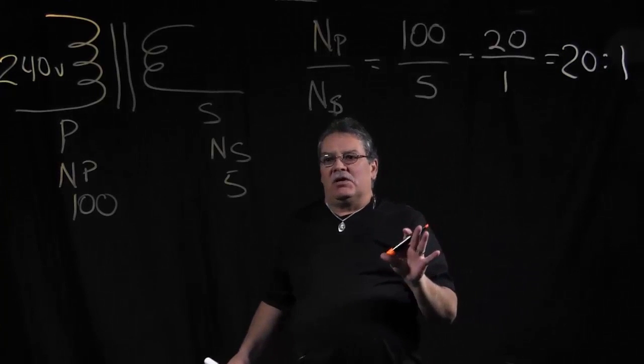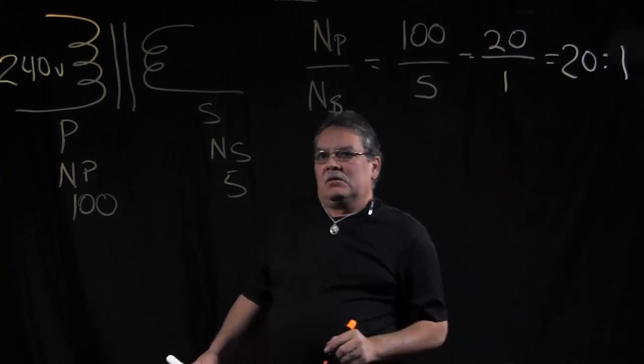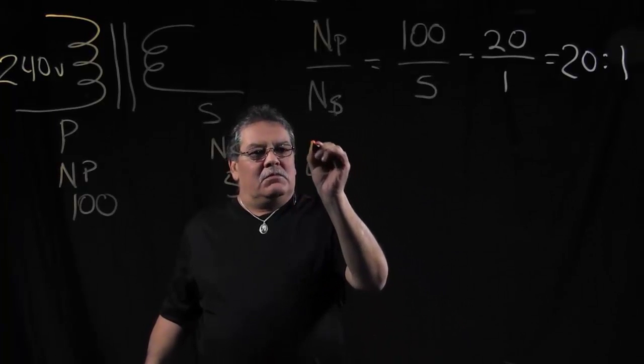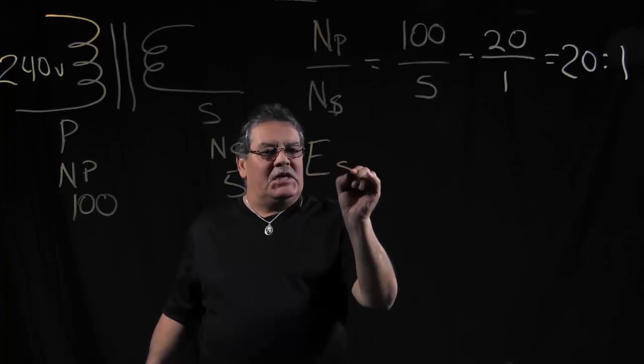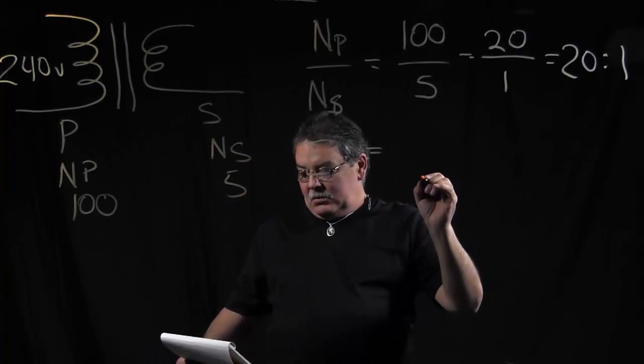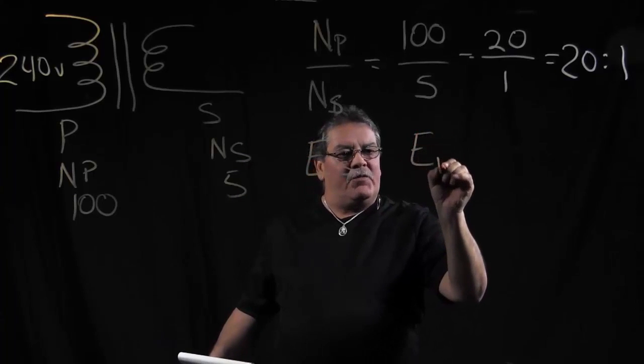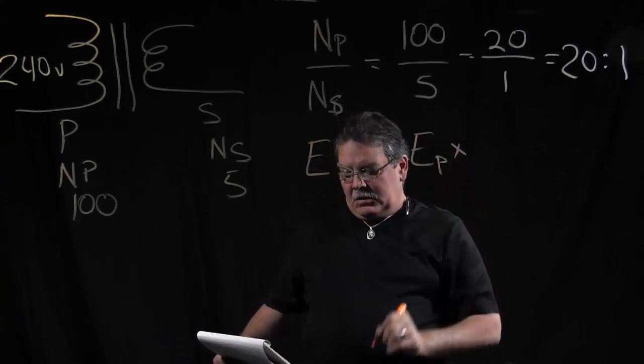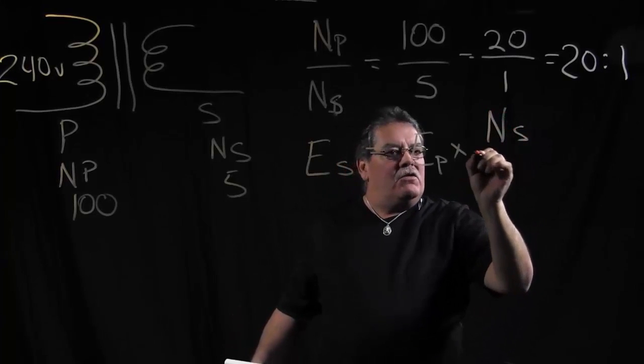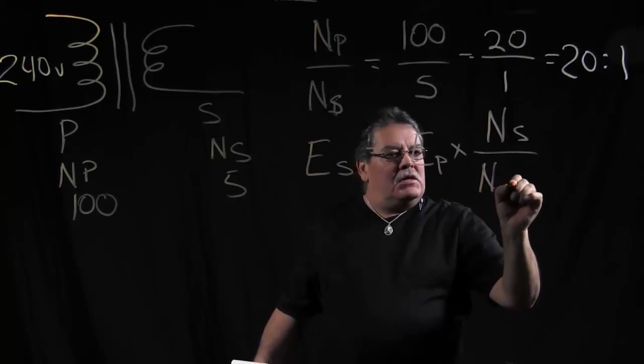Now from there, we can calculate what our secondary voltage is. So we'll use a new formula for that, which is ES, voltage in our secondary, equals EP, our primary voltage, times our turns in the secondary over our turns in the primary.